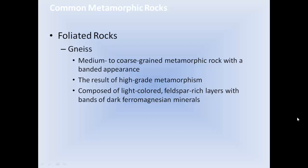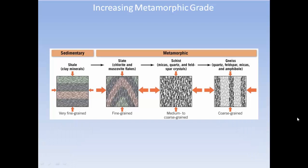Gneiss is a medium to coarse-grained metamorphic rock with a banded appearance, resulting from high-grade metamorphism. It is composed of light-colored feldspar-rich layers with bands of dark ferro-magnesian minerals. Starting from sedimentary shale with clay minerals and very fine grains, under some temperature and pressure it becomes slate under low-grade metamorphism.